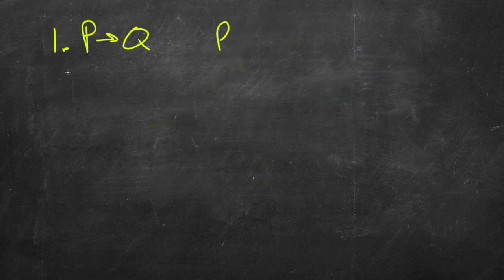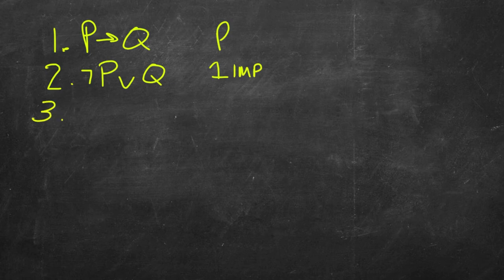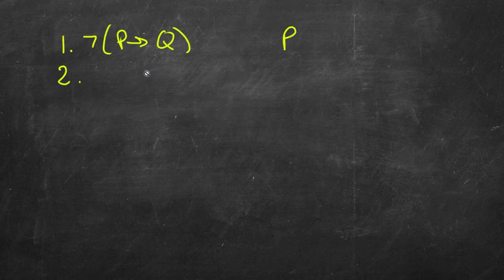Now let's look at an example of implication in a proof. On line one we have P then Q, and we can use implication on line one to derive not P or Q — citing line one and indicating we're using implication. And of course, since you can swap one formula for the other, we could go the other direction: reason from the disjunction on line two back to the conditional if P then Q, citing line two with implication.